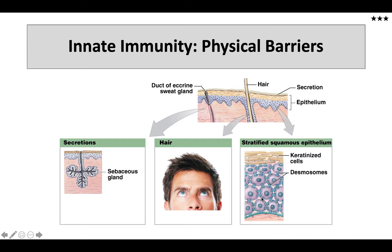Here we can see in picture form the physical barriers that protect us. We have the hair, the keratinized cells, and below that keratinized layer the epithelium with additional epithelial layers and the desmosomes connecting those. Here's a sebaceous gland that will secrete sebum — that's the oil — onto the surface of the skin, along with our sweat glands and hair follicles.